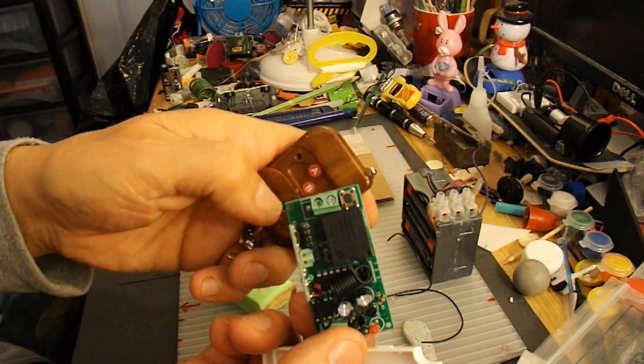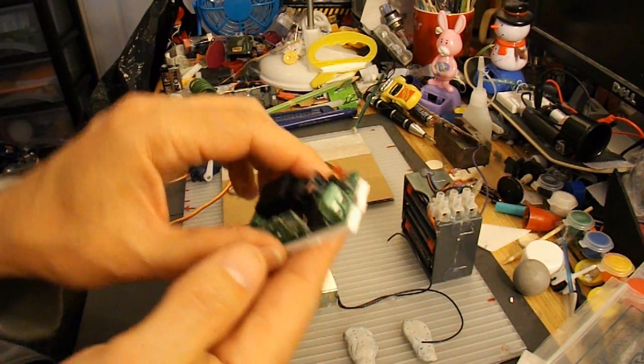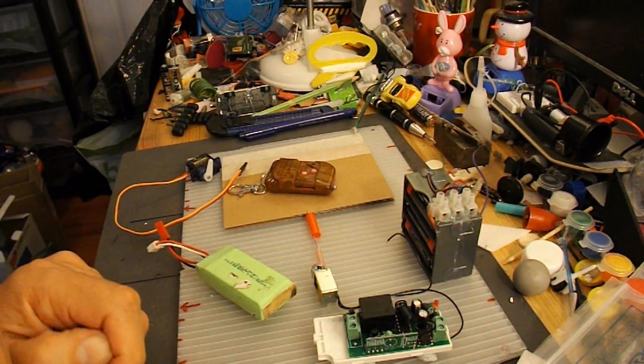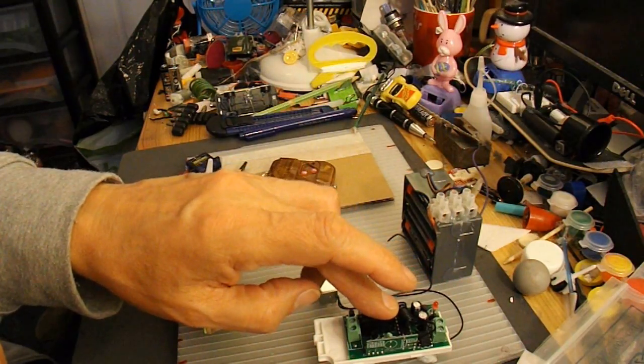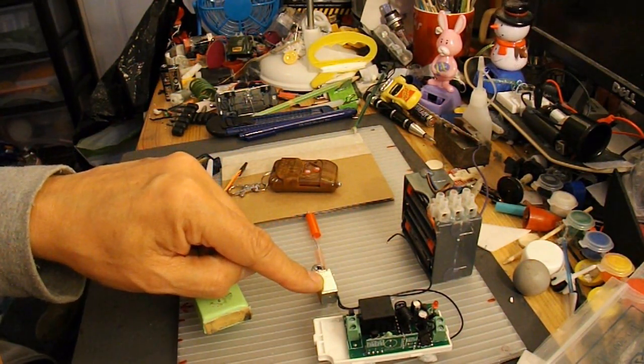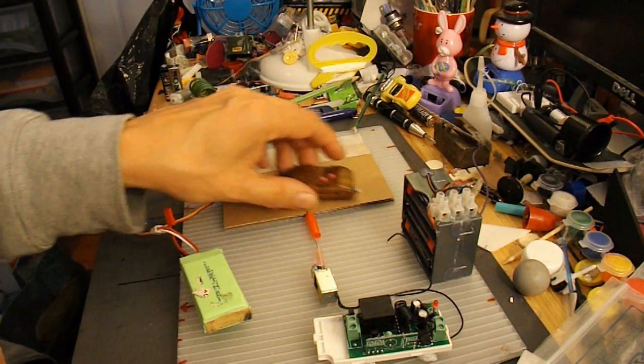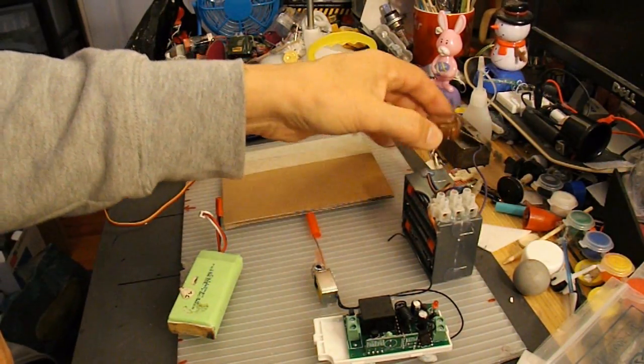Button A turns it on, button B turns it off. So we went through that yesterday or the day before, using that receiver, that transmitter, and a little solenoid that opens the door, or unlocks the door.